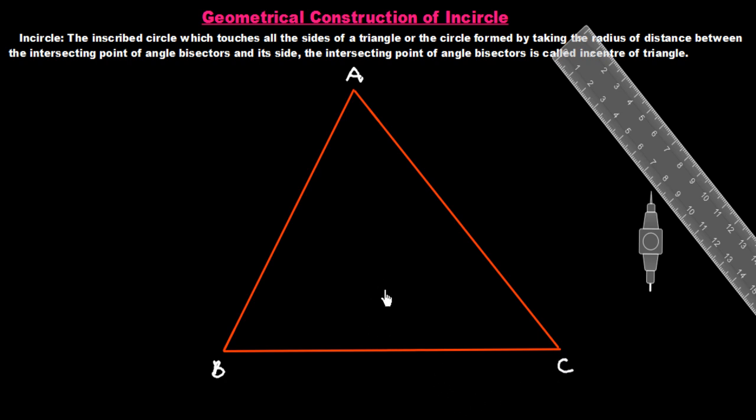Now we give some names to the vertices of this triangle. This is our vertex A, this is our vertex B, and this one is our vertex C. Now we have to draw angle bisectors of any two vertices — we draw the angle bisectors of vertex B and vertex C.